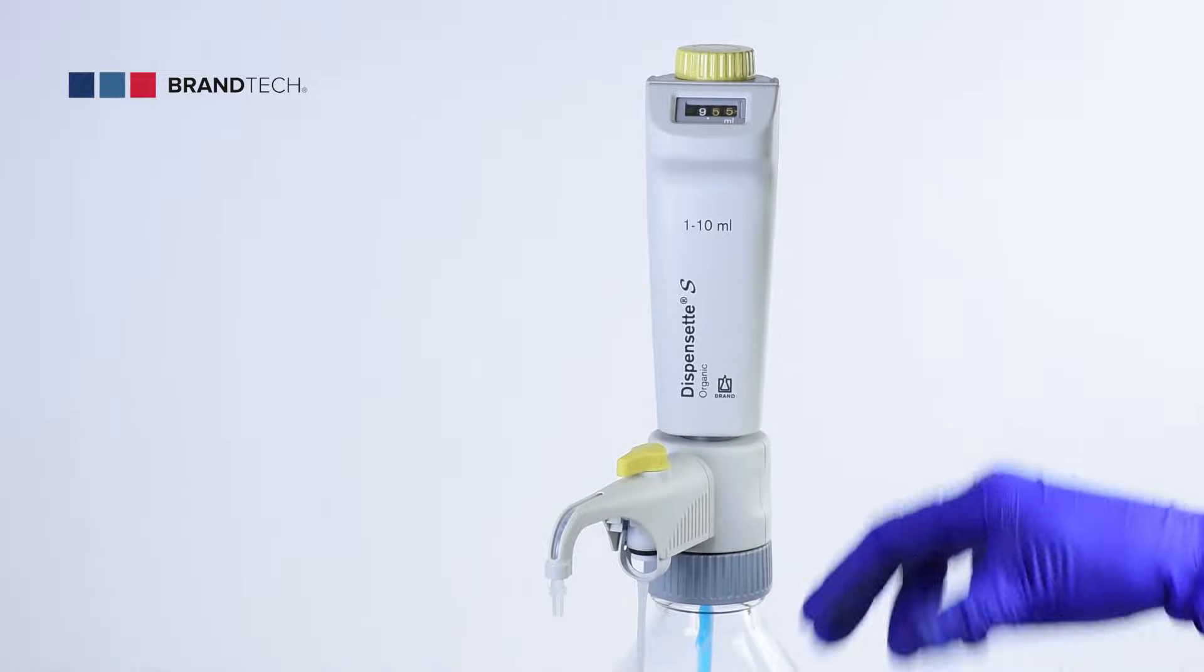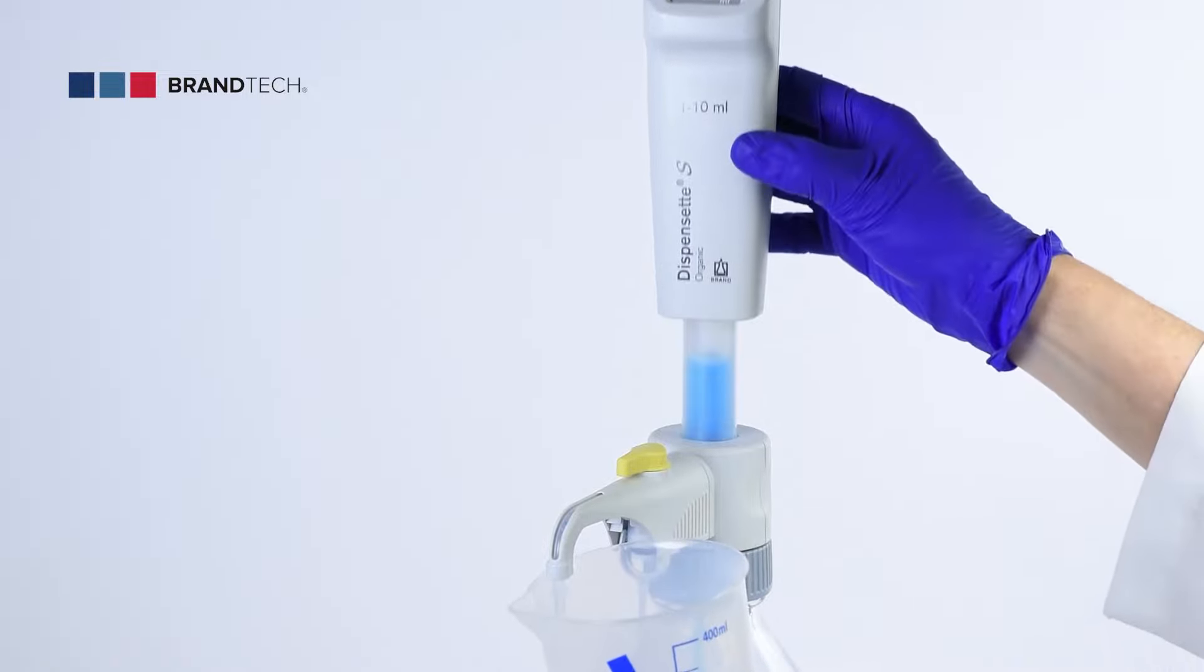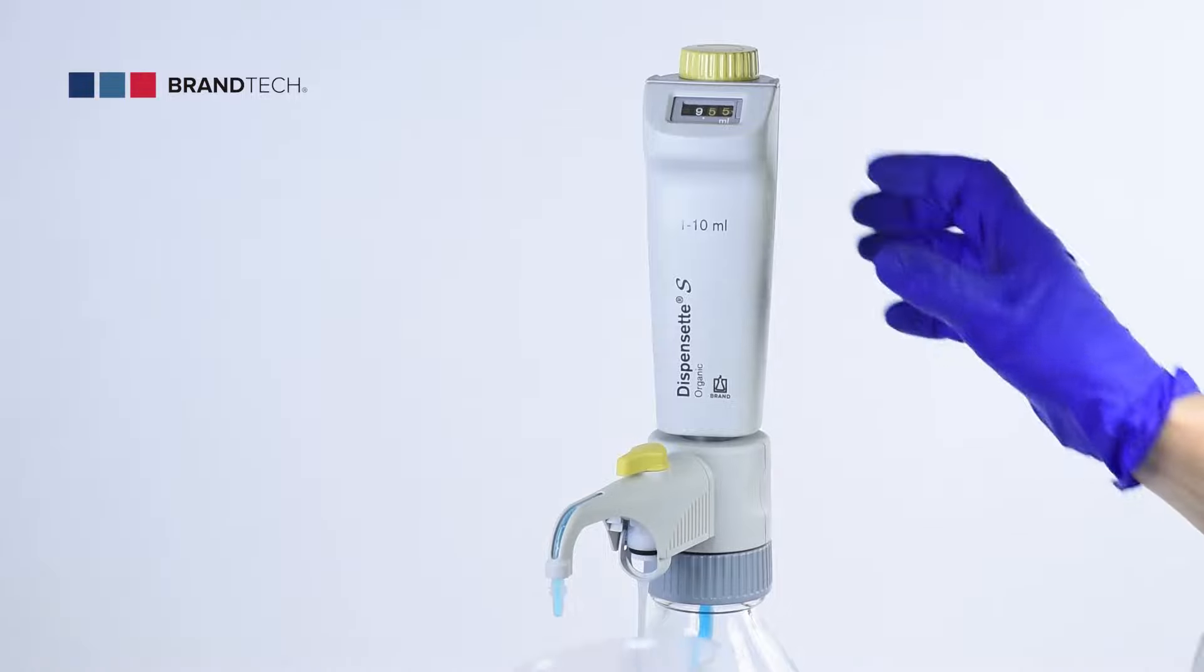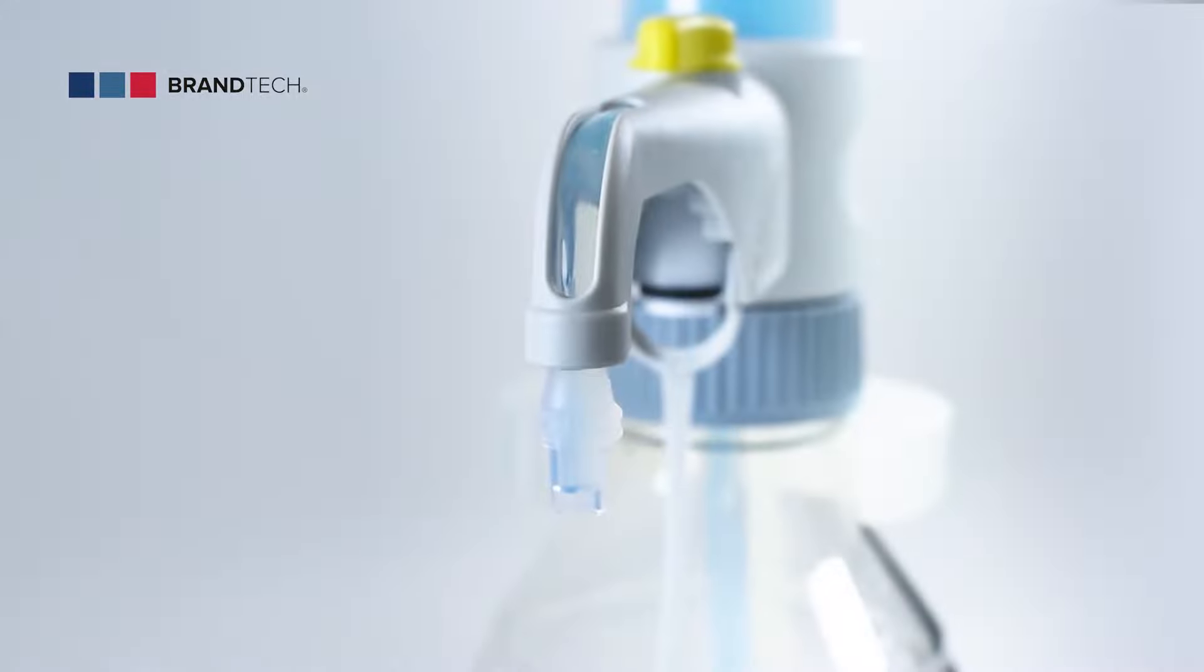Rotate the recirculation valve to dispense. To avoid splashing, hold the discharge tube against the inner wall of a suitable waste vessel and dispense. Discard the first dispensing. Make sure no bubbles appear in the viewing window on the discharge tube.